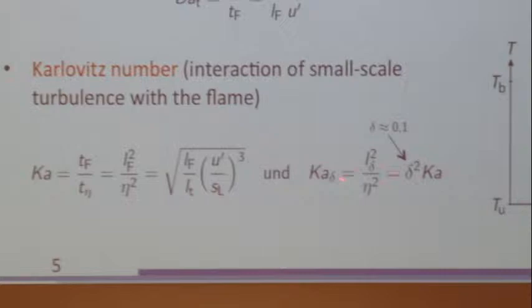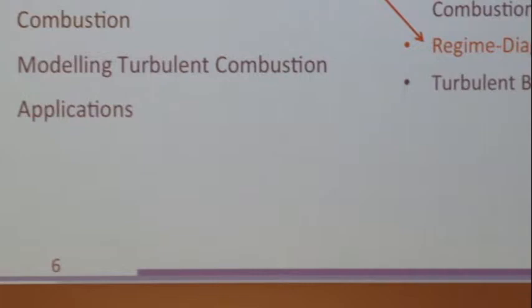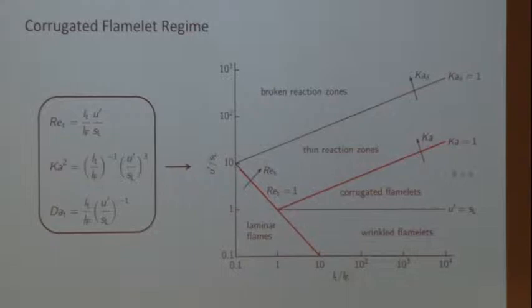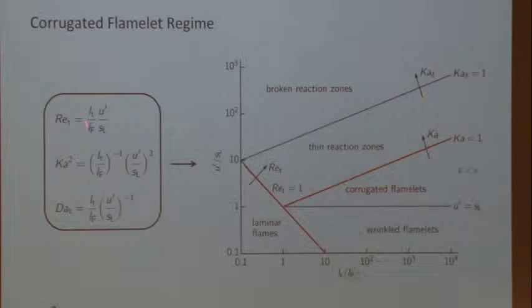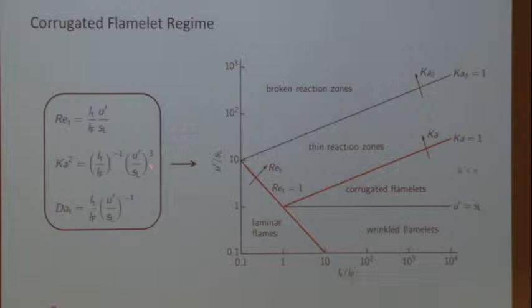Now we can use this to build regime diagrams. All non-dimensional groups are expressed in terms of a velocity ratio and a length scale ratio. These are the important parameters describing the flame and turbulence. We want to make a plot of the velocity ratio U prime/S_L as a function of the length scale ratio L_T/L_F.